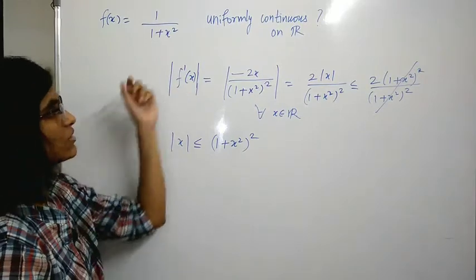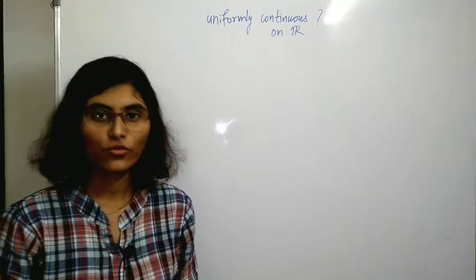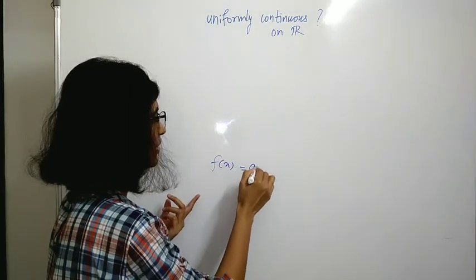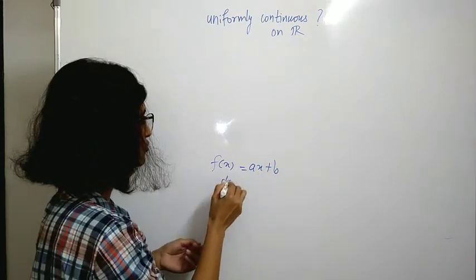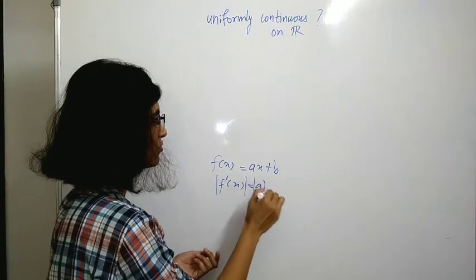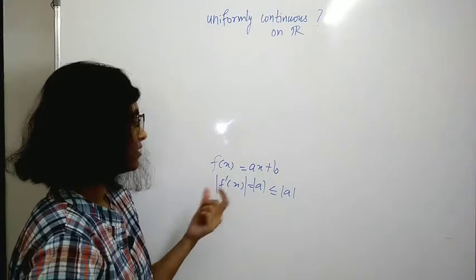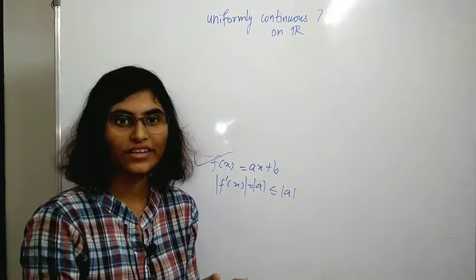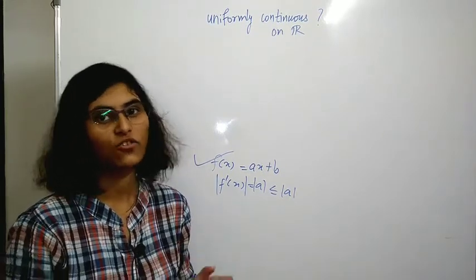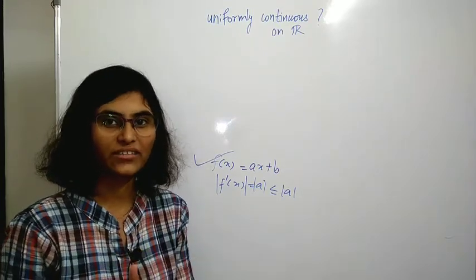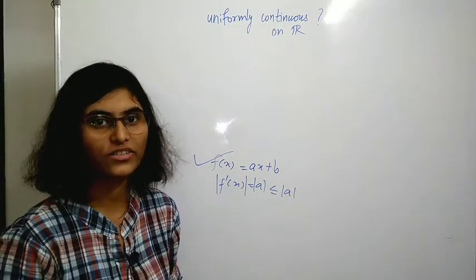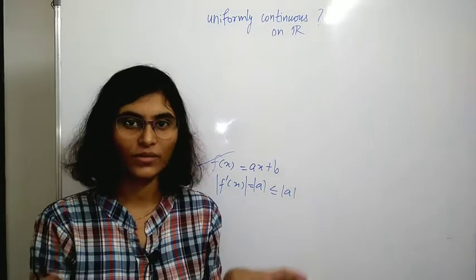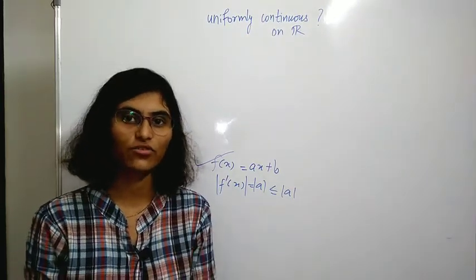Since f'(x) is bounded, f(x) = 1/(1+x²) is uniformly continuous on ℝ. More generally: linear functions f(x) = ax+b have f'(x) = a (bounded), so they are uniformly continuous. f(x) = sin x has f'(x) = cos x with |cos x| ≤ 1, so sin x is uniformly continuous. Similarly cos x is uniformly continuous, and sums of uniformly continuous functions are uniformly continuous, so sin x + x, cos x + sin x, etc. are all uniformly continuous.